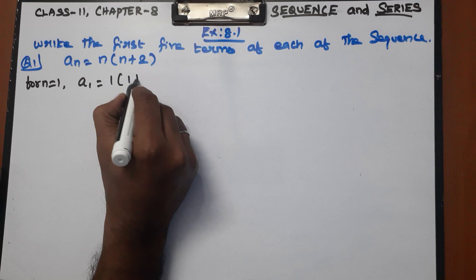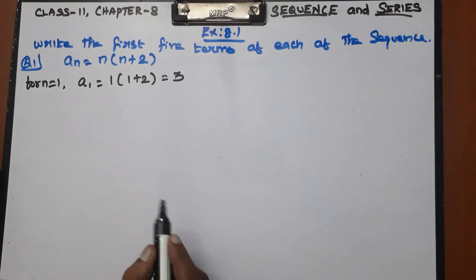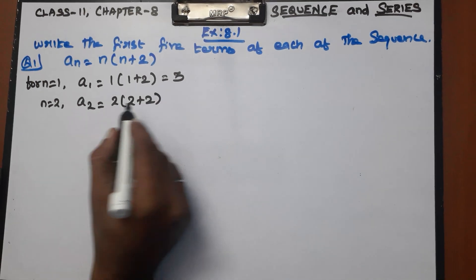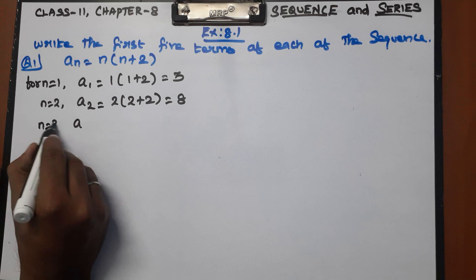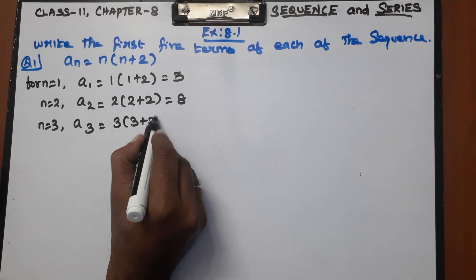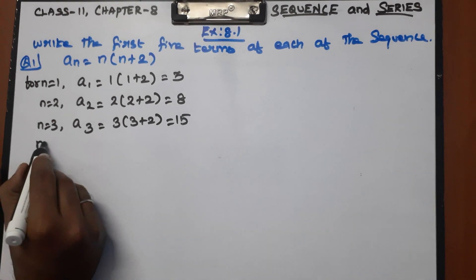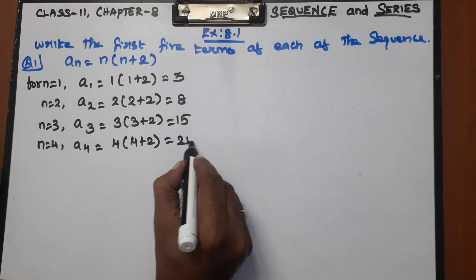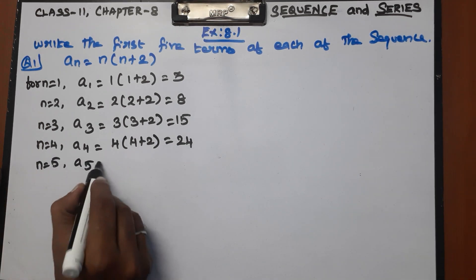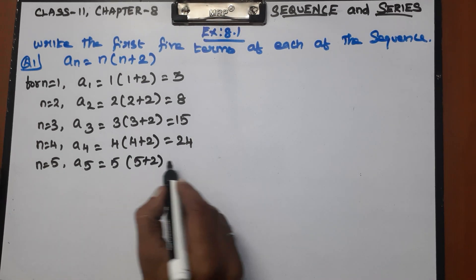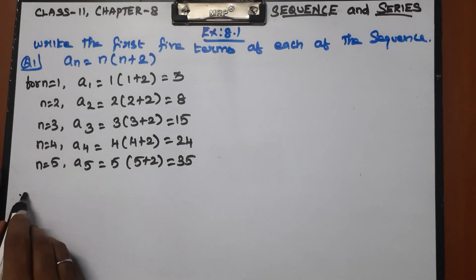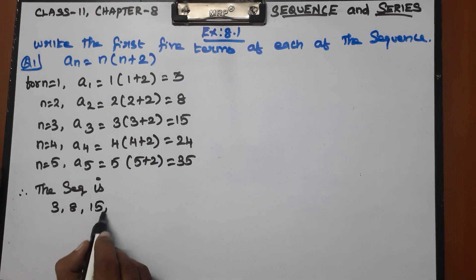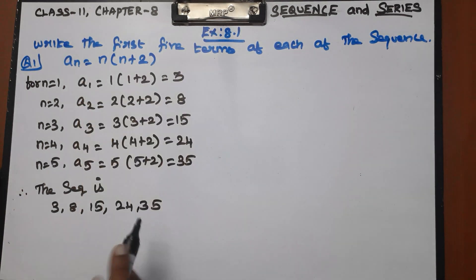First term: a1 equals 1 into (1 plus 2) equals 1 into 3 equals 3. For n equal to 2: a2 equals 2 into (2 plus 2) equals 2 into 4 equals 8. For n equal to 3: a3 equals 3 into (3 plus 2) equals 3 into 5 equals 15. For n equal to 4: a4 equals 4 into (4 plus 2) equals 4 into 6 equals 24. For n equal to 5: a5 equals 5 into (5 plus 2) equals 5 into 7 equals 35. Therefore the sequence is 3, 8, 15, 24, 35. These are the first five terms.